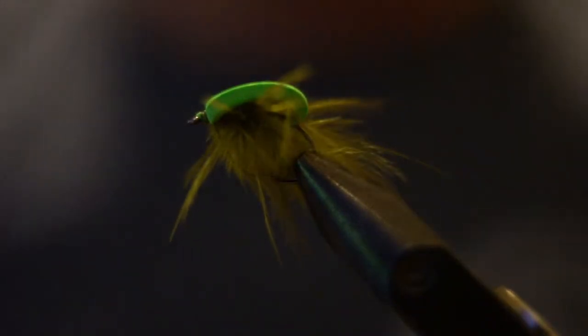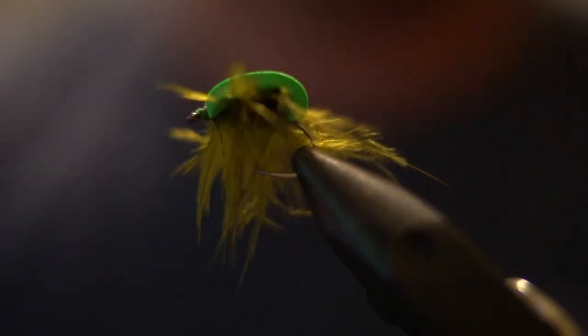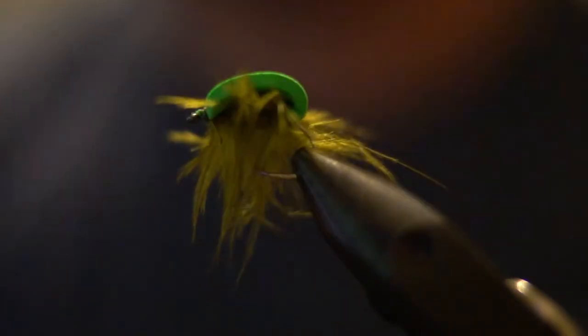Alright, I'm going to try and do a tying tutorial on my grass carp fly. I just use a piece of craft foam and some of the soft webby fibers from the bottom of a hackle feather.